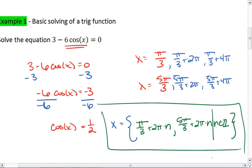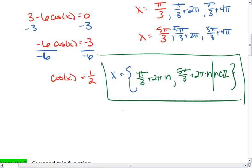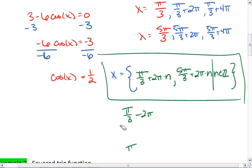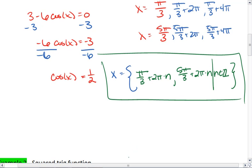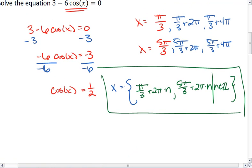The n is an integer is basically just telling us that we can take pi-thirds plus 2 pi times a negative 1, which would be a negative 2 pi. We could do pi-thirds plus 2 pi times 0, which is just 0. We could do pi-thirds plus 2 pi. We could do pi-thirds plus 4 pi. As long as n is an integer, which is any whole negative or positive number, zero is included in that as well.